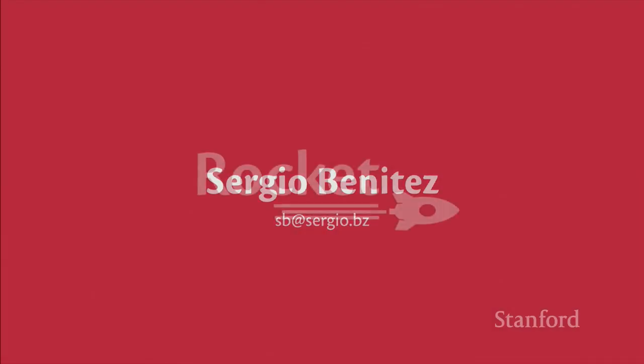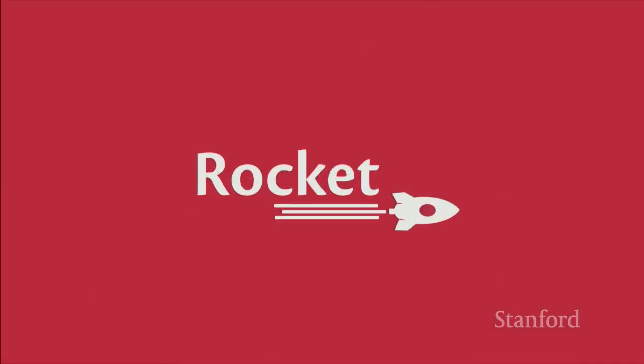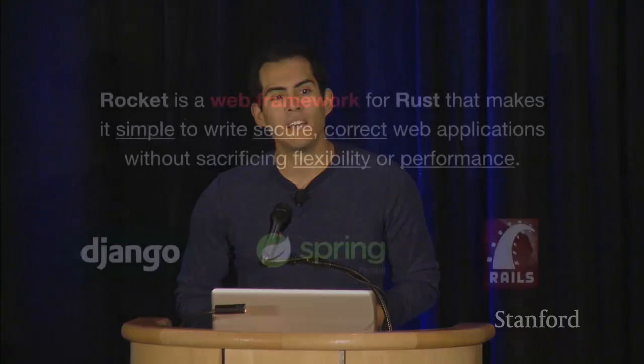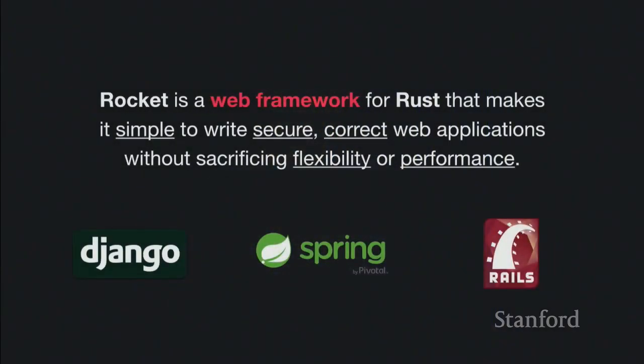Rocket is a web framework for Rust that ideally makes it simple to write secure, correct web applications without sacrificing flexibility — you should be able to do what you want, not what the web framework wants you to do — or performance. It should be really, really fast, even with all these guarantees. Just to be clear, by web framework I mean things like Django, Spring, or Rails: libraries that help you write web back-end code.